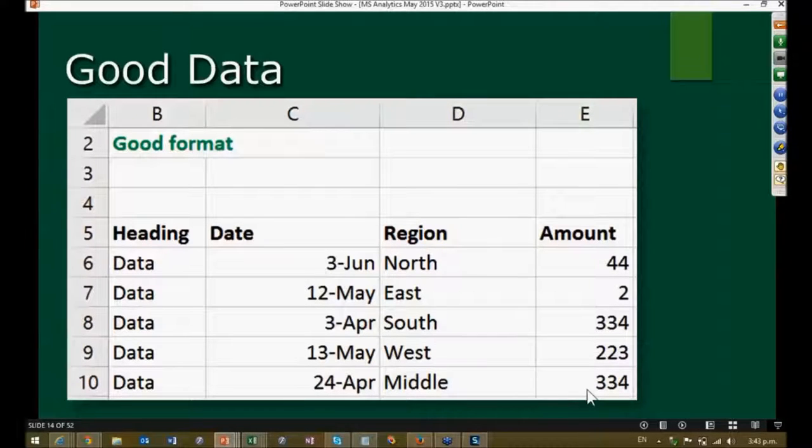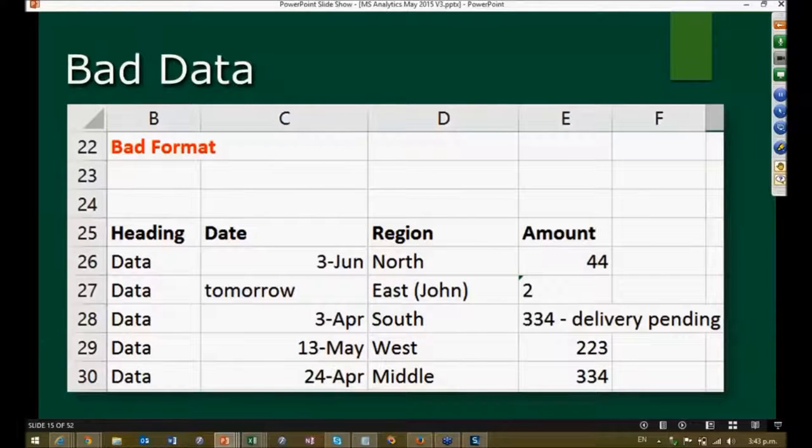For example, in this case we have the same headings but the data type got mixed up. Or in this case, even worse, we've put two kinds of information in one column. This is another common problem which, if you don't notice and correct at an early stage, will waste a lot of time analyzing that data.